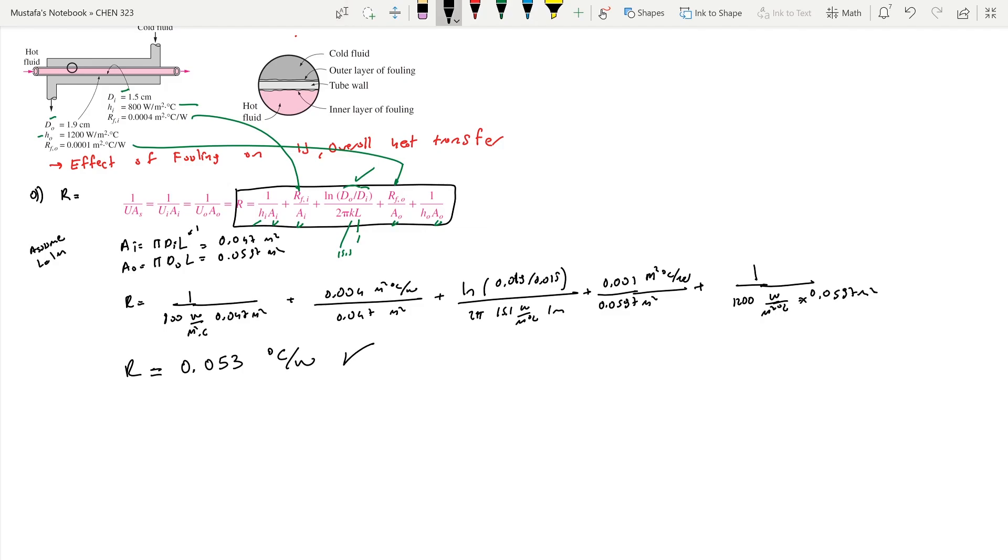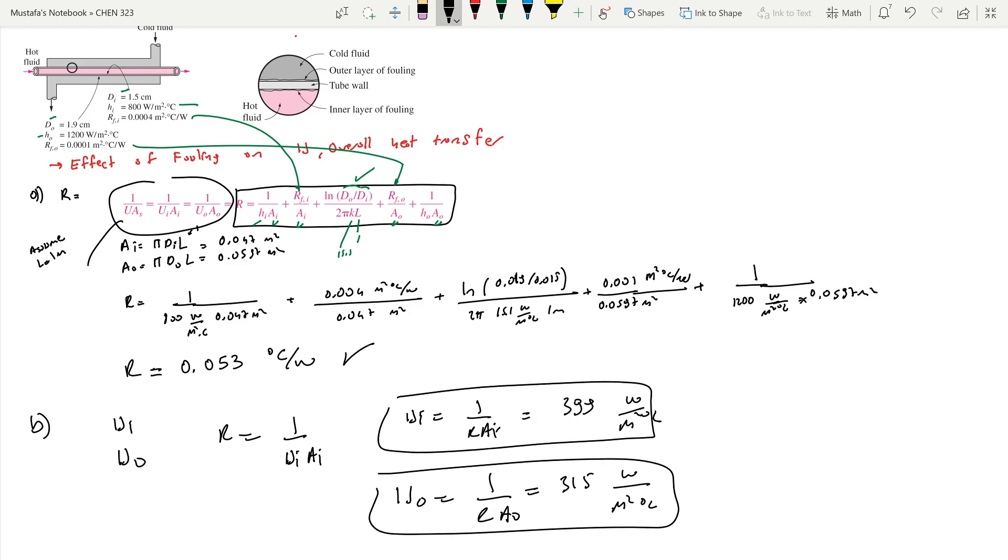Part B asks us to find Ui and Uo. If you focus on this equation, R = 1/(Ui·Ai), that means Ui = 1/(R·Ai). If you plug in the numbers, you'll get Ui = 399 W/m²·°C versus Uo = 315 W/m²·°C. These are overall heat transfer coefficients with respect to inner wall and outer wall, and Rtotal is given here.